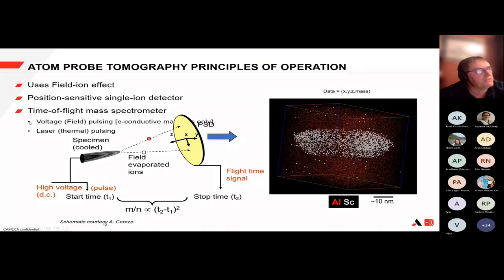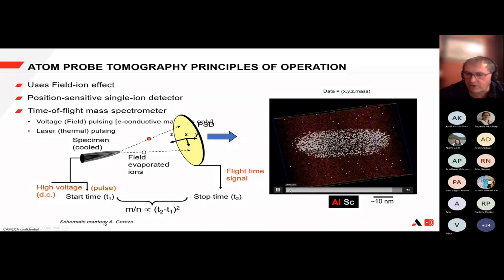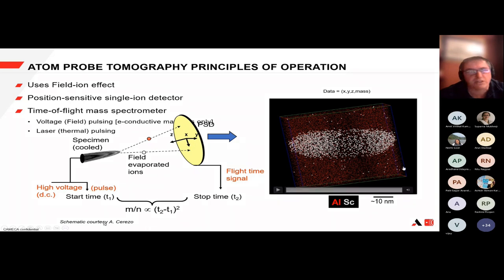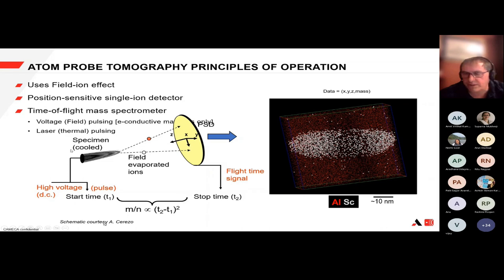The atom probe uses a DC field and a pulsing technique to allow time-of-flight measurements, measuring the time it takes for individual ions to leave the specimen and arrive at the detector. We get a mass spectrum, allocate mass-to-charge to each peak, and identify the ions. This is done at UHV, and we keep the specimen cold during the experiment to preserve spatial resolution, suppress migration, and minimize the thermal energy of the departing ion species.